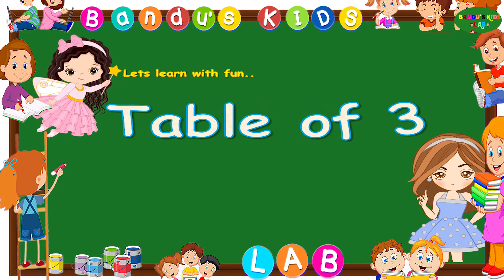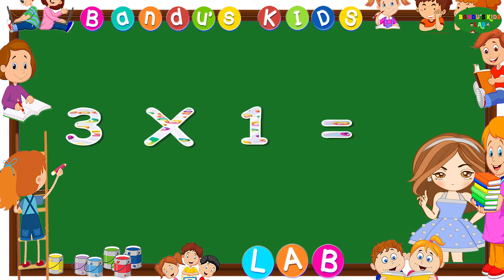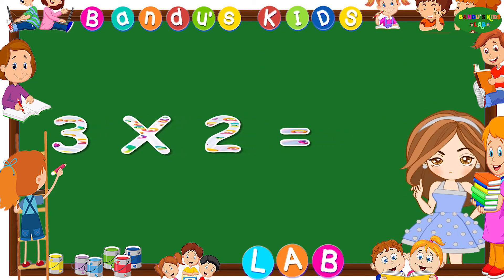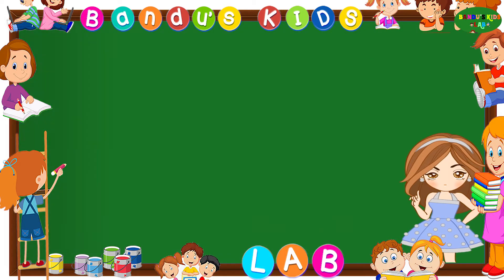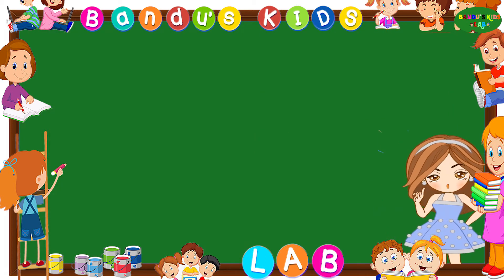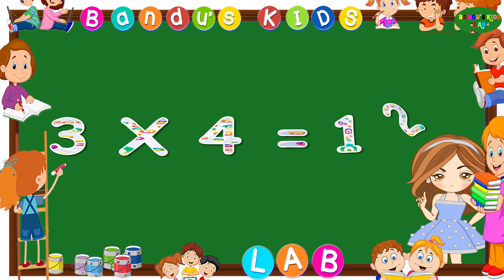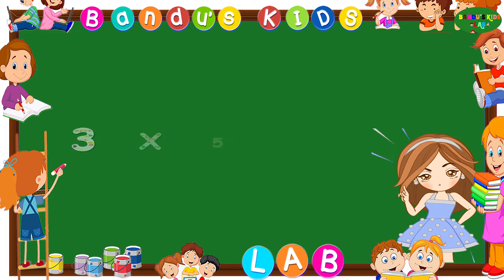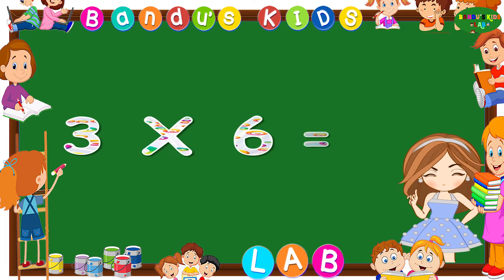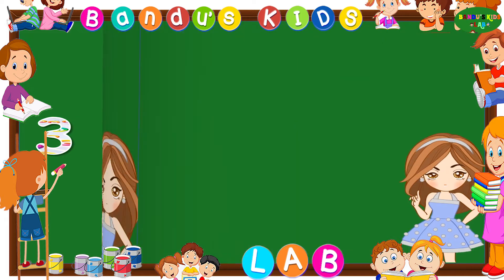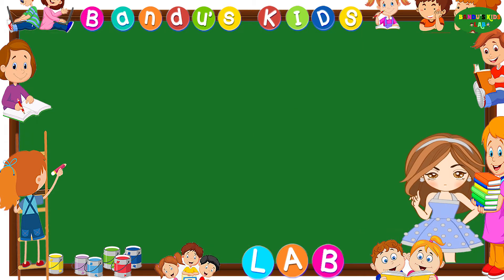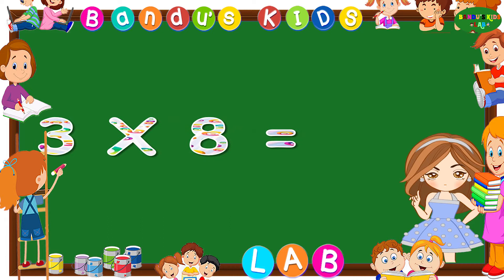Table of three: three ones are three, three twos are six, three threes are nine, three fours are twelve, three fives are fifteen, three sixes are eighteen, three sevens are twenty-one, three eights are twenty-four.